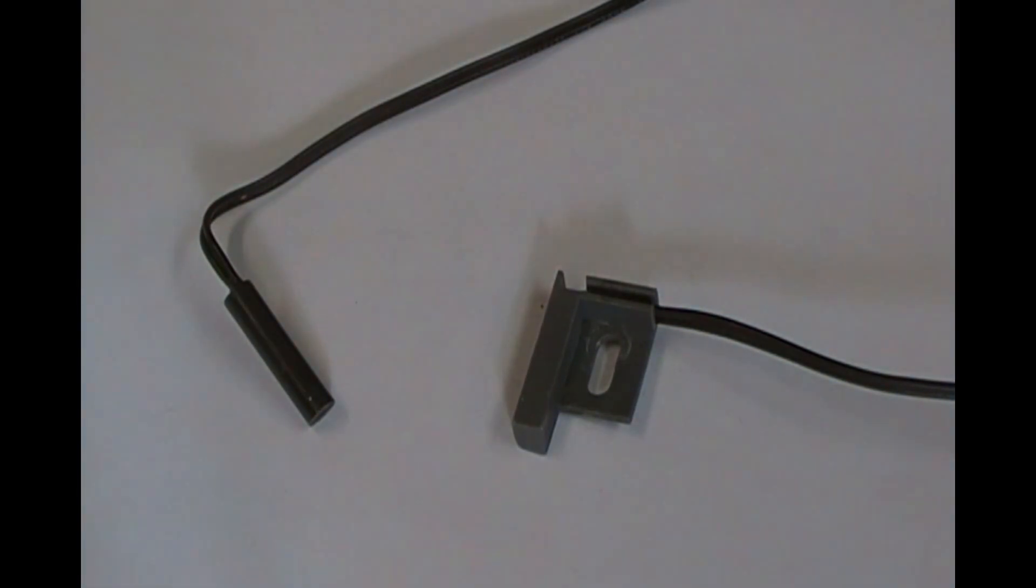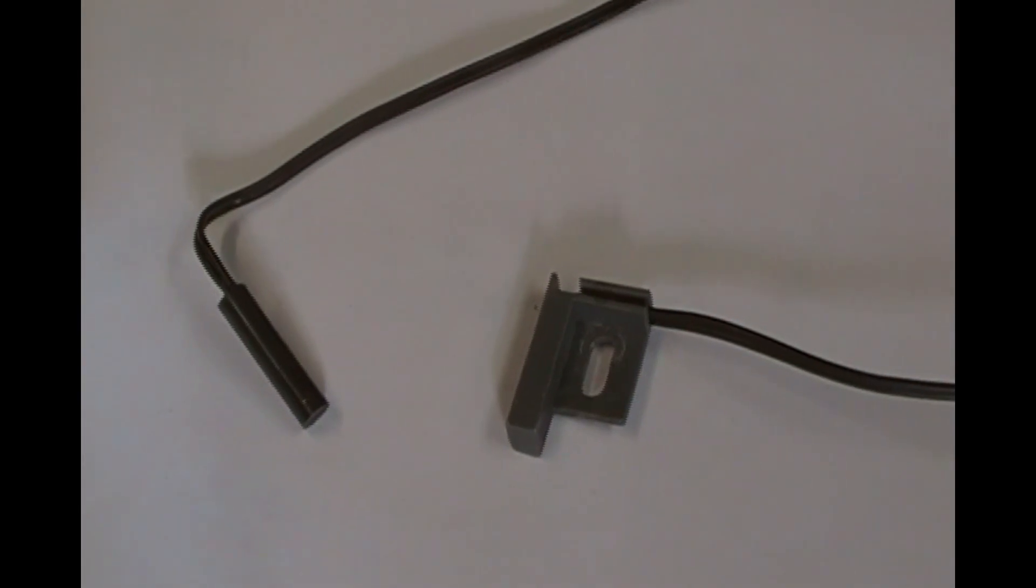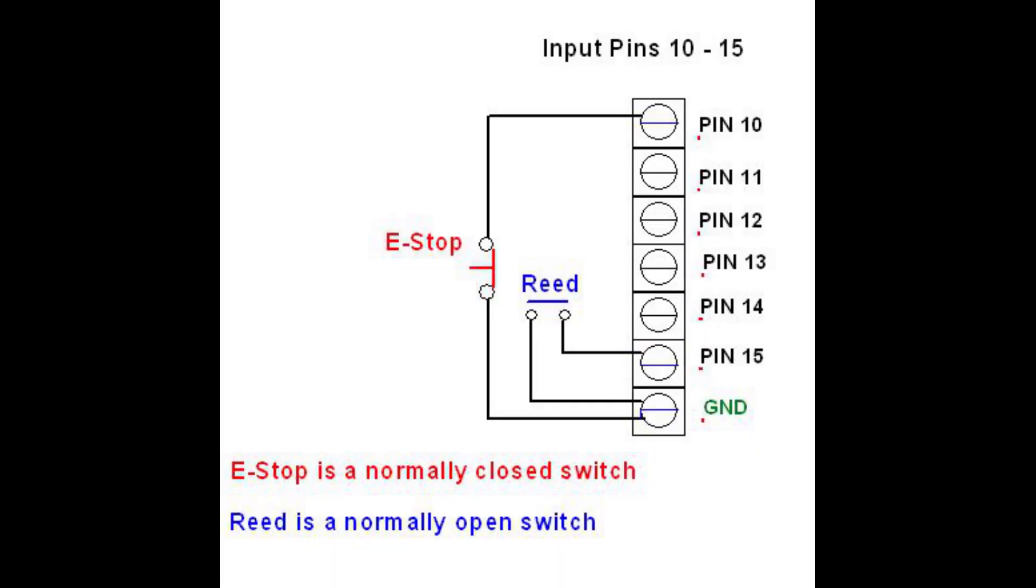Reed sensors have contacts that close when they are near a magnet. They are commonly used in treadmills to sense the treadmill speed. They do not require a 5 volt DC source or an inverter circuit. They can be connected directly to the input of a breakout board. A reed sensor has no polarity. You cannot hook them up backwards.